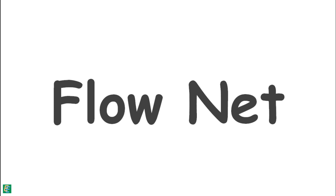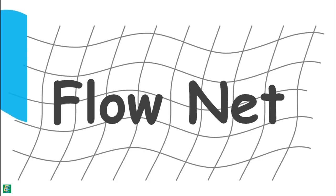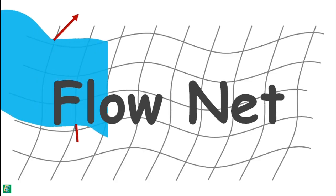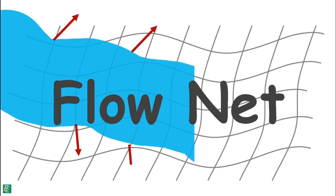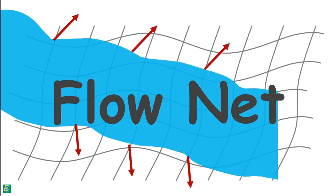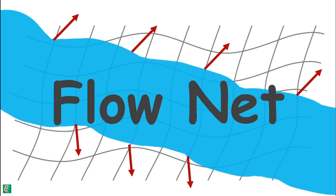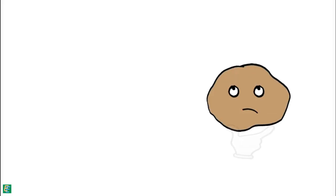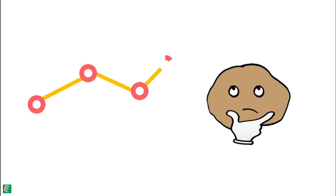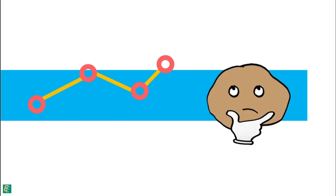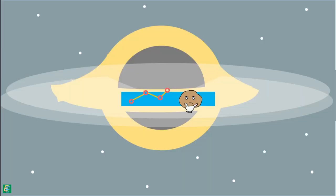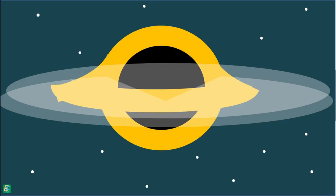A flow net is a graphical representation of how the hydraulic energy is dissipated as water flows through a pervious medium. To understand the flow net, let's begin with analyzing one-dimensional flow before jumping into the multidimensional space.